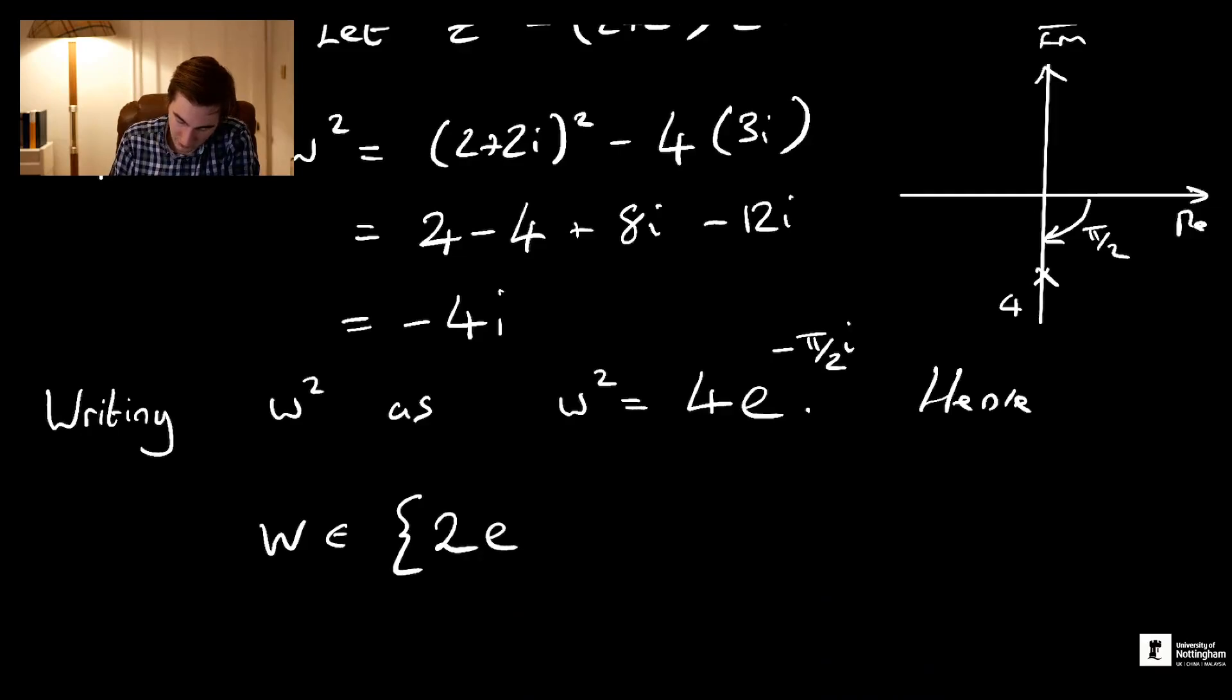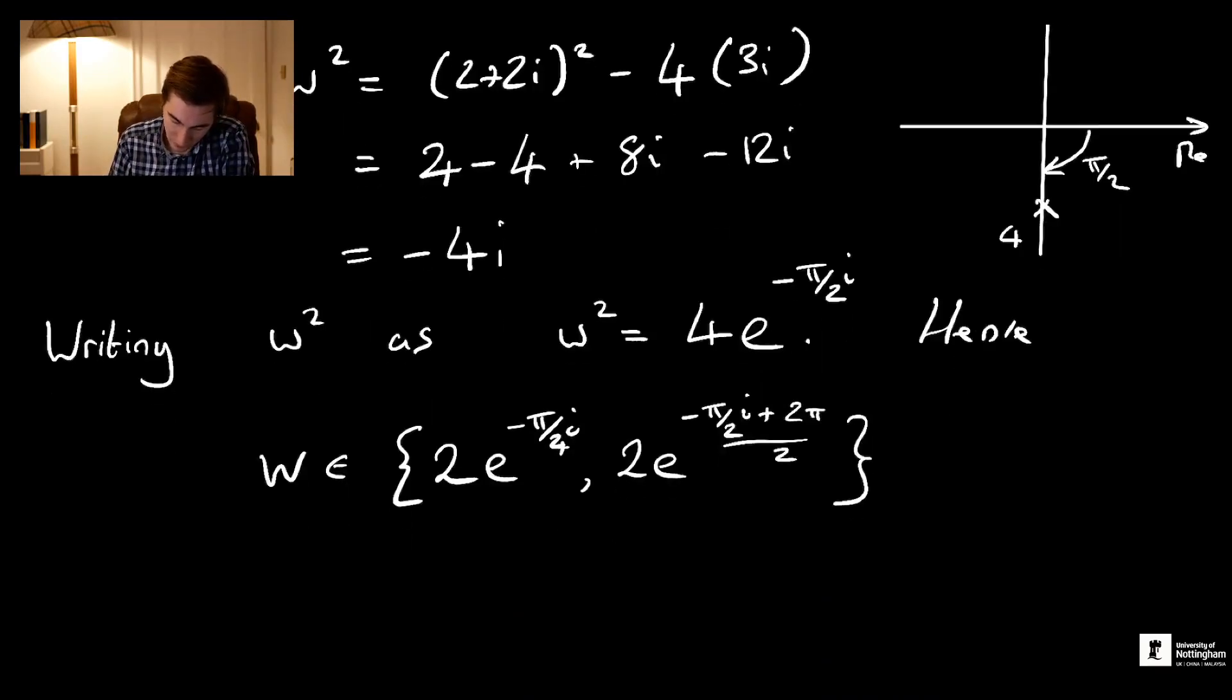W is in the set where we've got the square root of 4, which is 2, times e^(-iπ/4). And the next one is 2e^(iπ/4), which is π/2 plus 2π all divided by 2, from our previous formula.